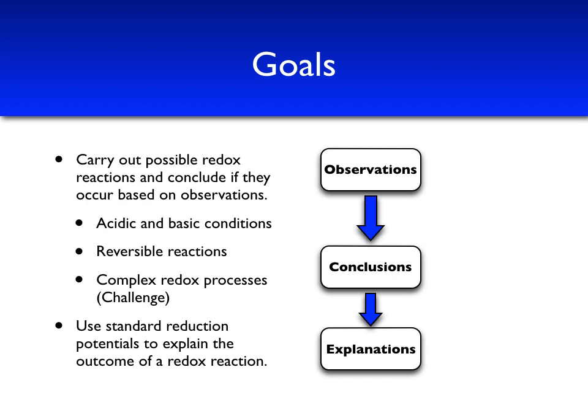The goals for this experiment are to carry out several possible redox reactions and conclude whether or not they occur based on their observations. In this lab, we'll look at redox reactions under different pH conditions or acidic or basic conditions. We'll also take a look at reversible reactions and some complicated redox processes, the challenge of part 4. We'll also use standard reduction potentials to explain why certain redox reactions occur.